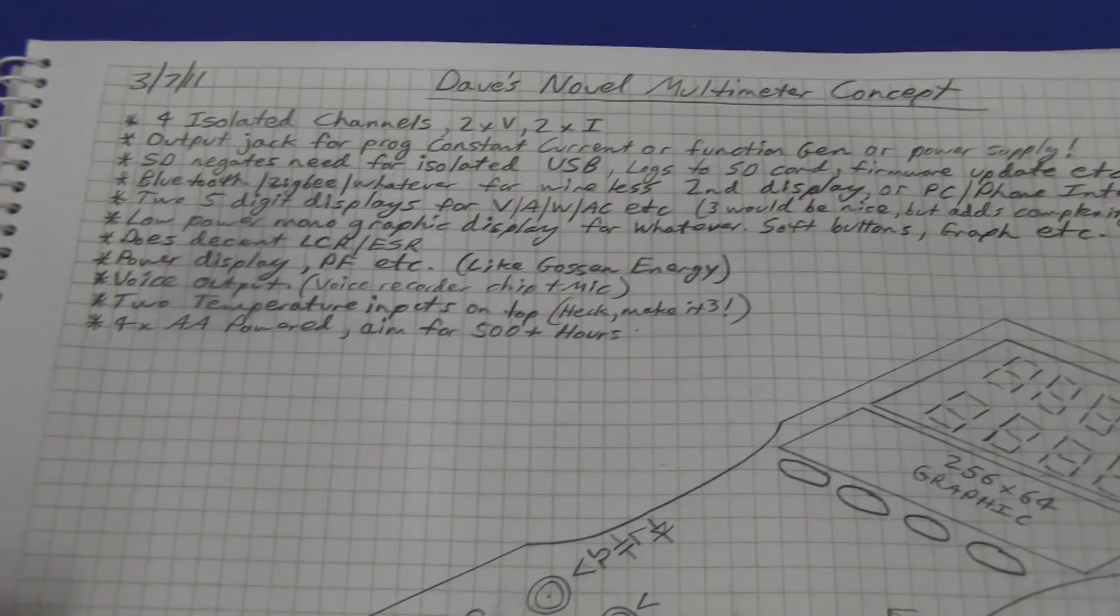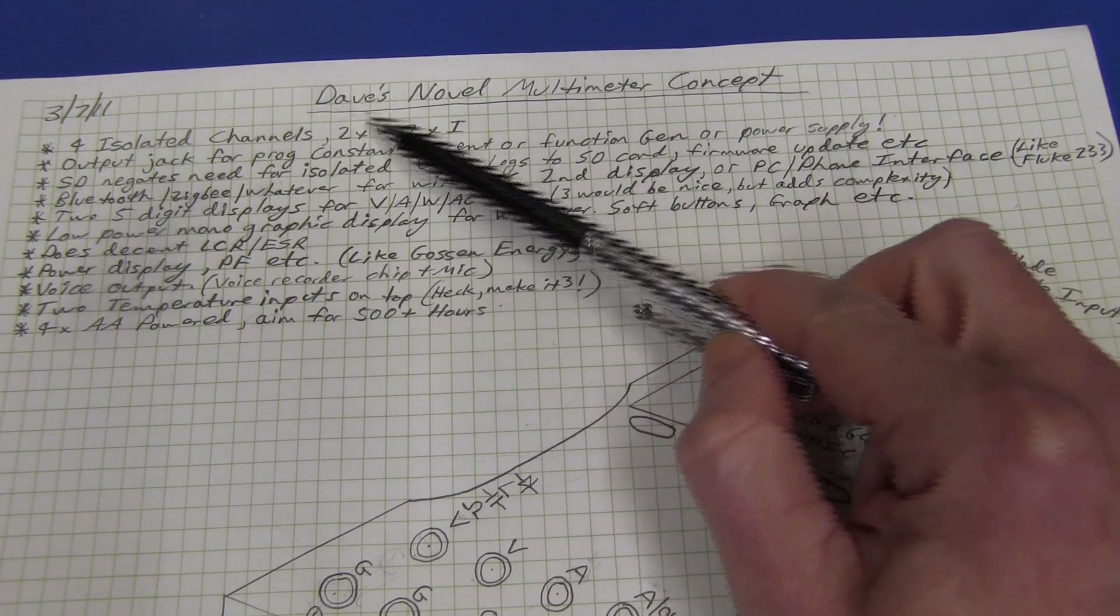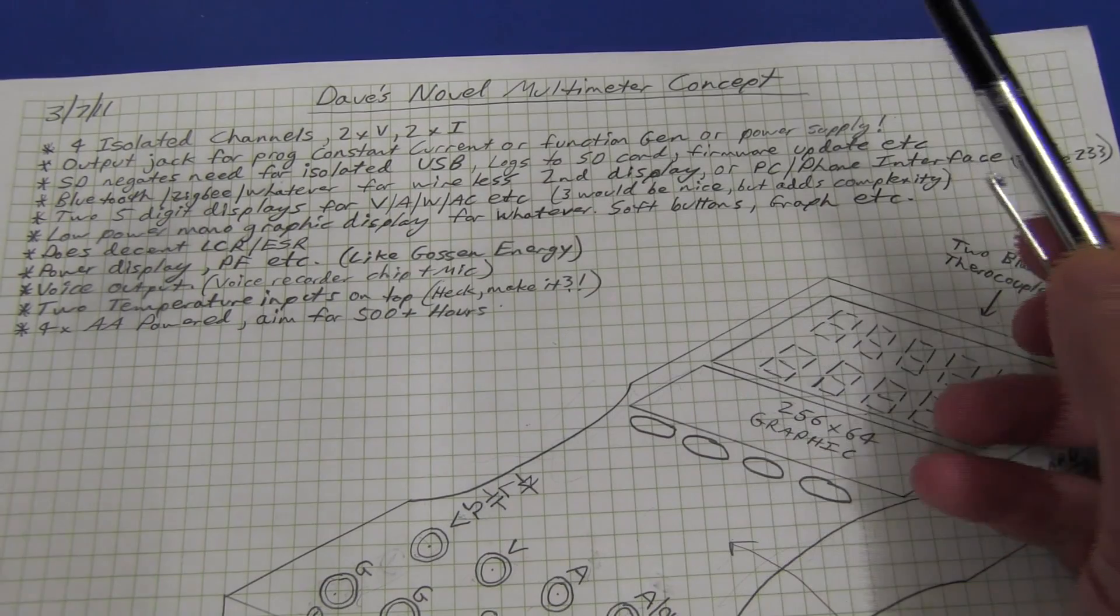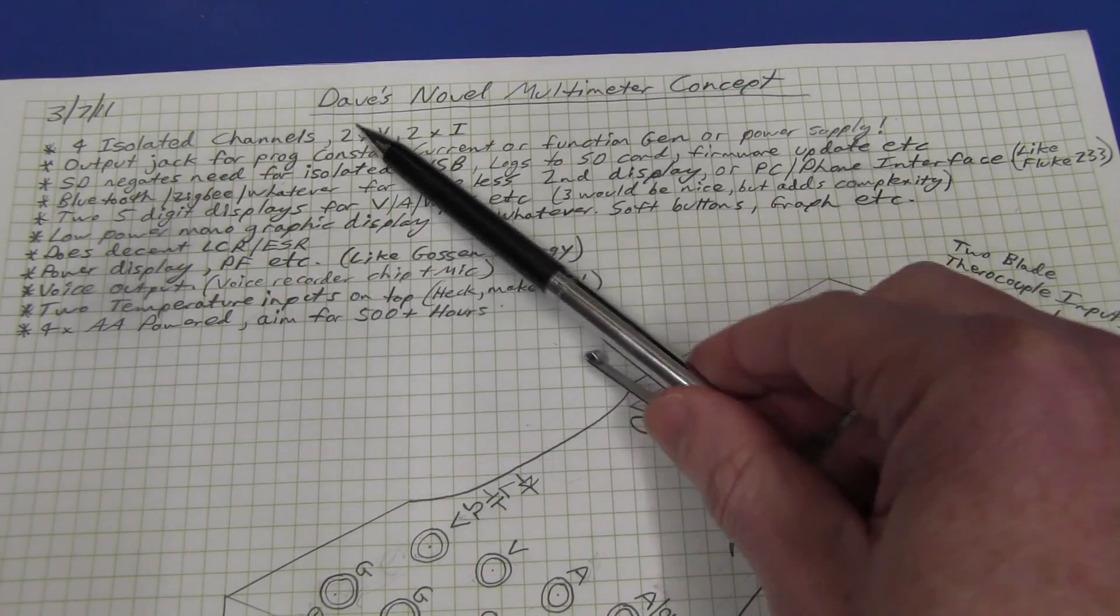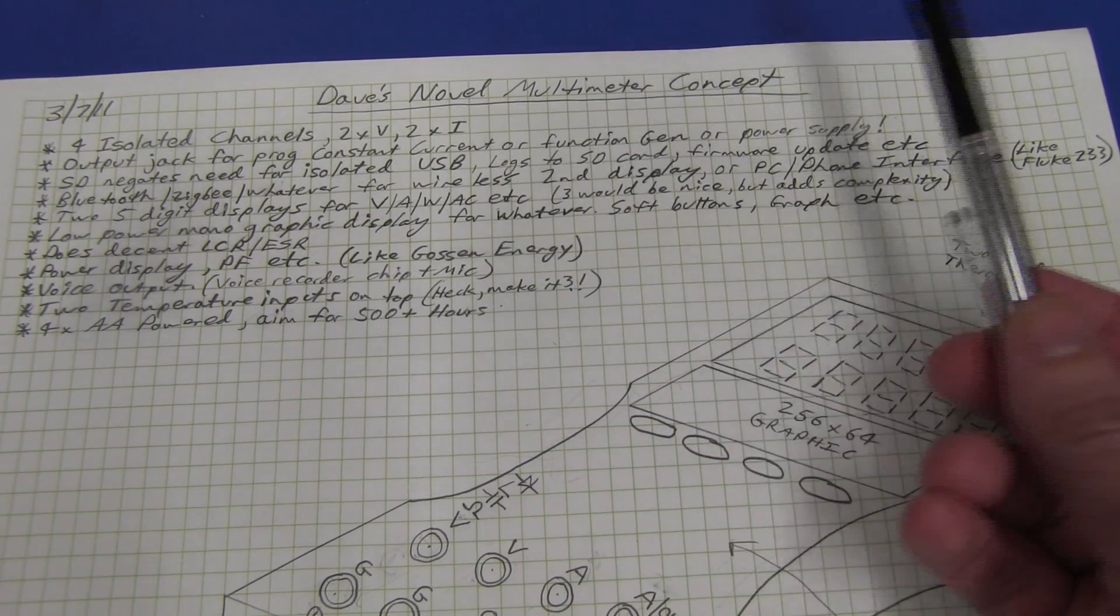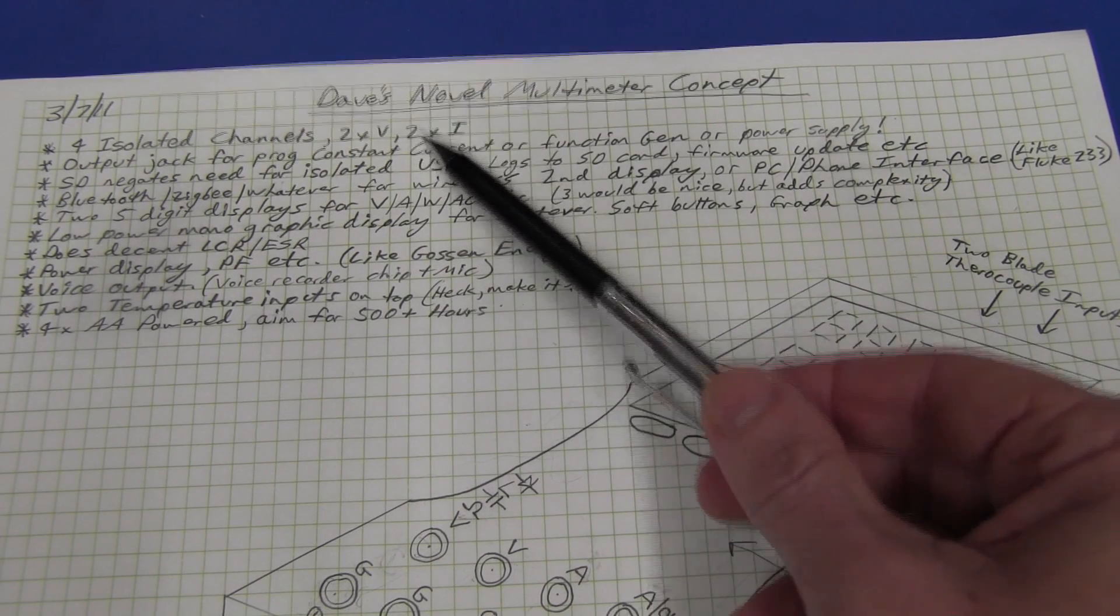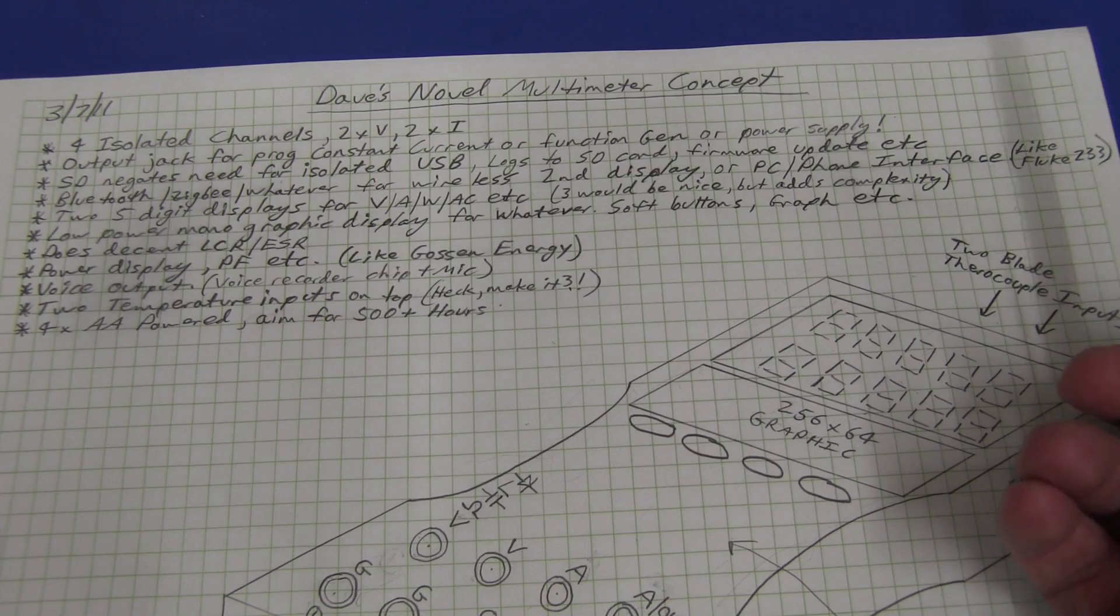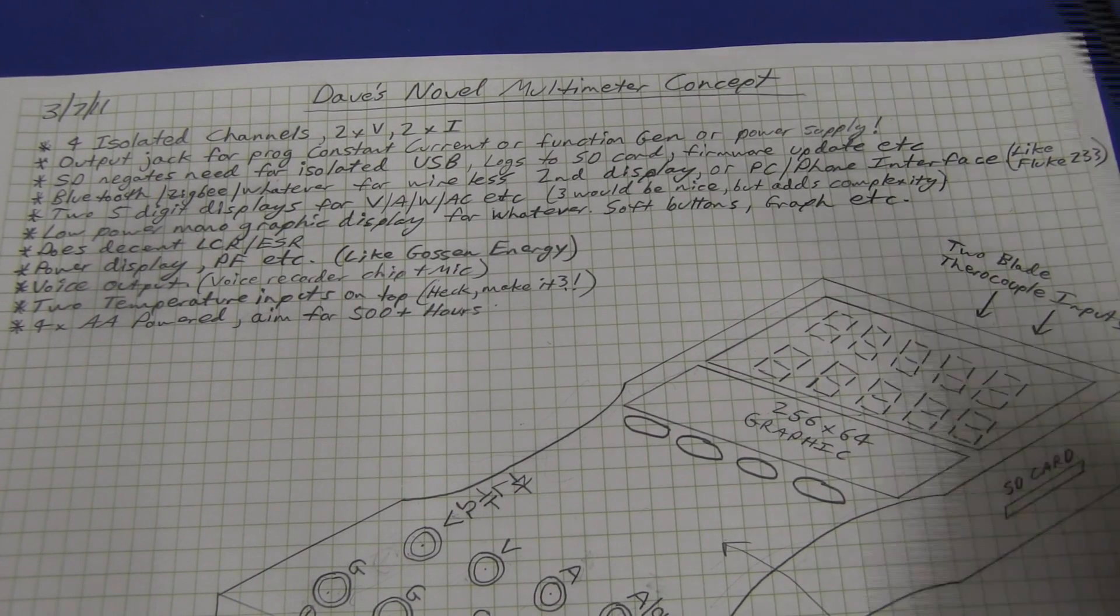And let's take a look at some of my notes up here. As we've mentioned, we've got four isolated channels, two voltage, two current. Just for the sake of simplicity, I don't think you need probably any more than that. It's just nice to have two voltage channels and two current channels, I think. Maybe you could argue that the current one should be dual purpose voltage inputs as well. So you could have a four channel voltage data logger. I haven't gotten that far into it.